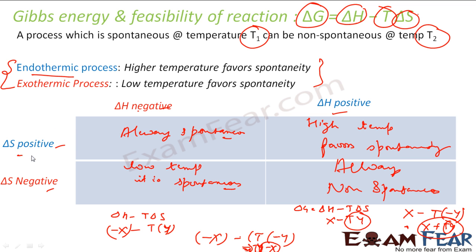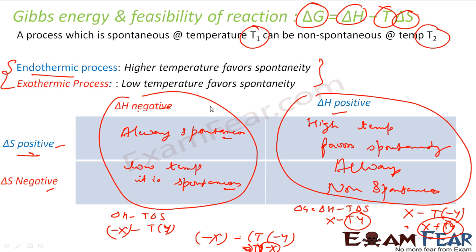Exothermic reactions have negative delta H. For exothermic reactions with negative delta S, low temperature favors spontaneity. For endothermic reactions, delta H is positive, so high temperature favors spontaneity. That is why the earlier statement was made: exothermic favors lower temperature and endothermic favors higher temperature for spontaneity.